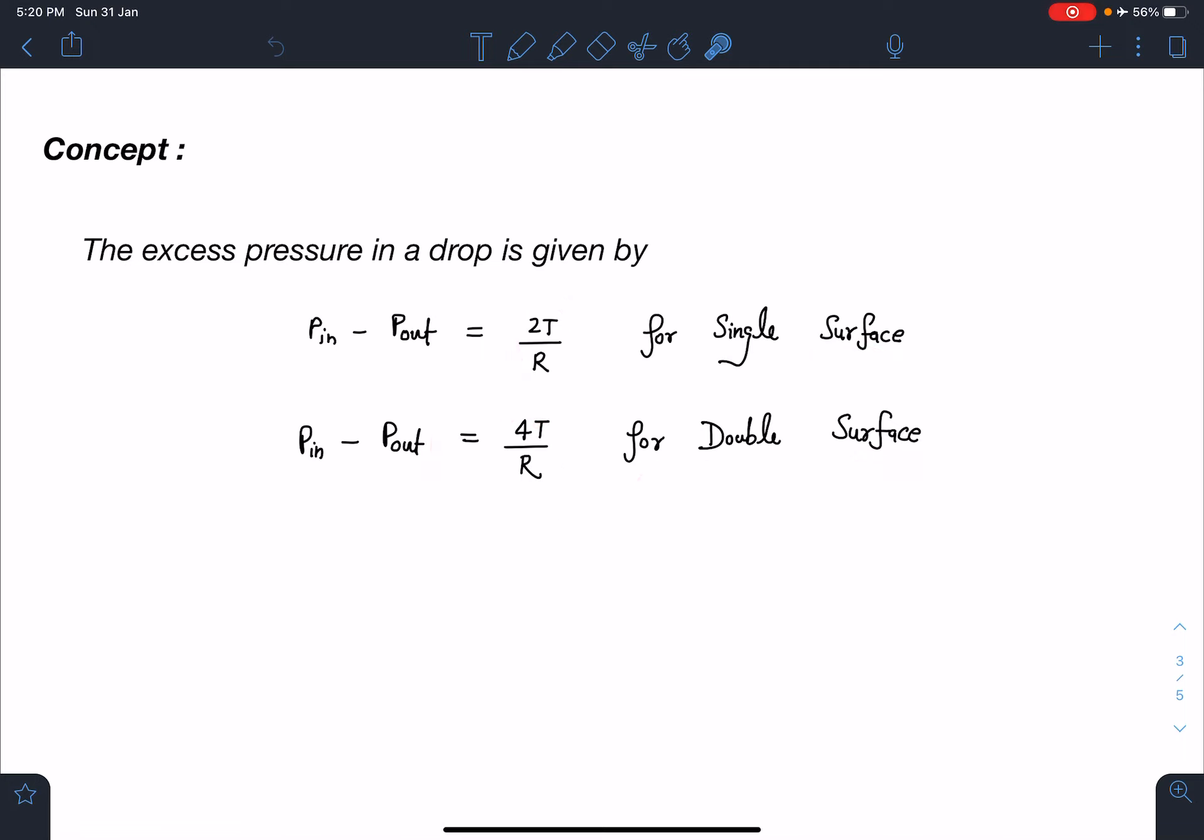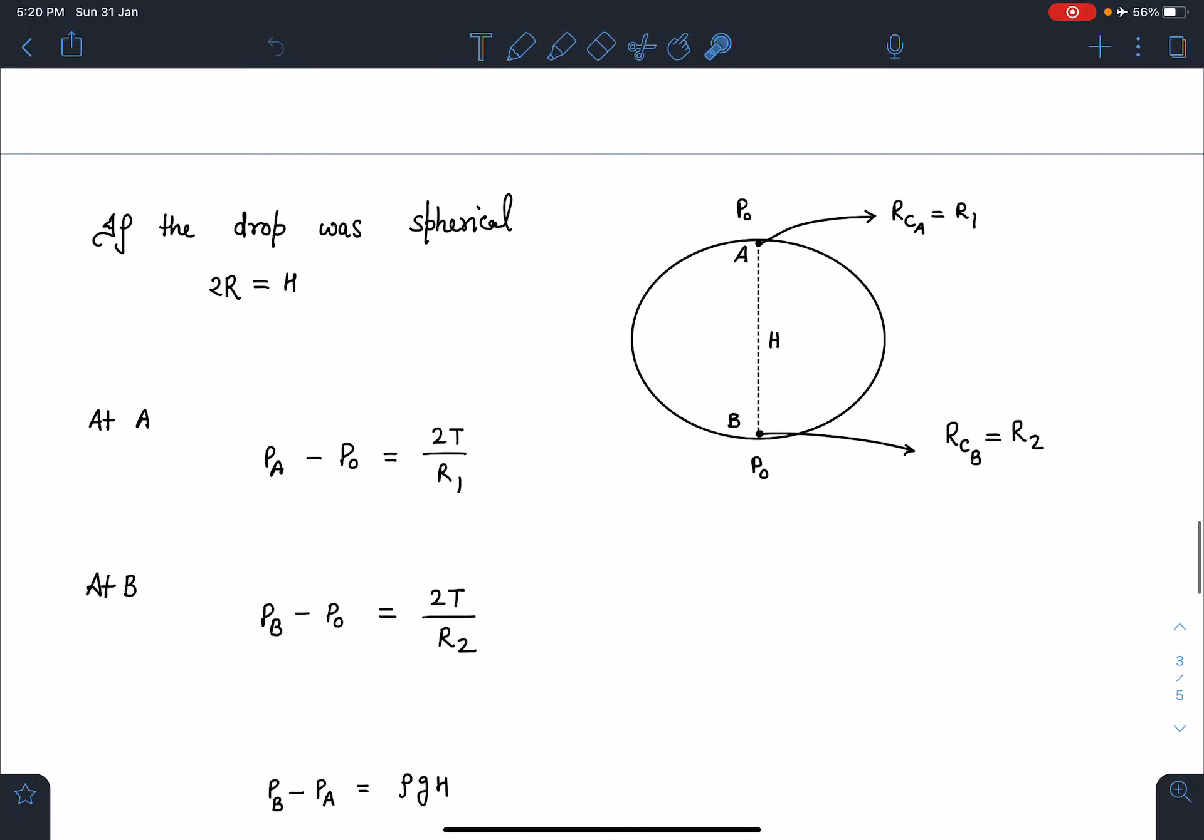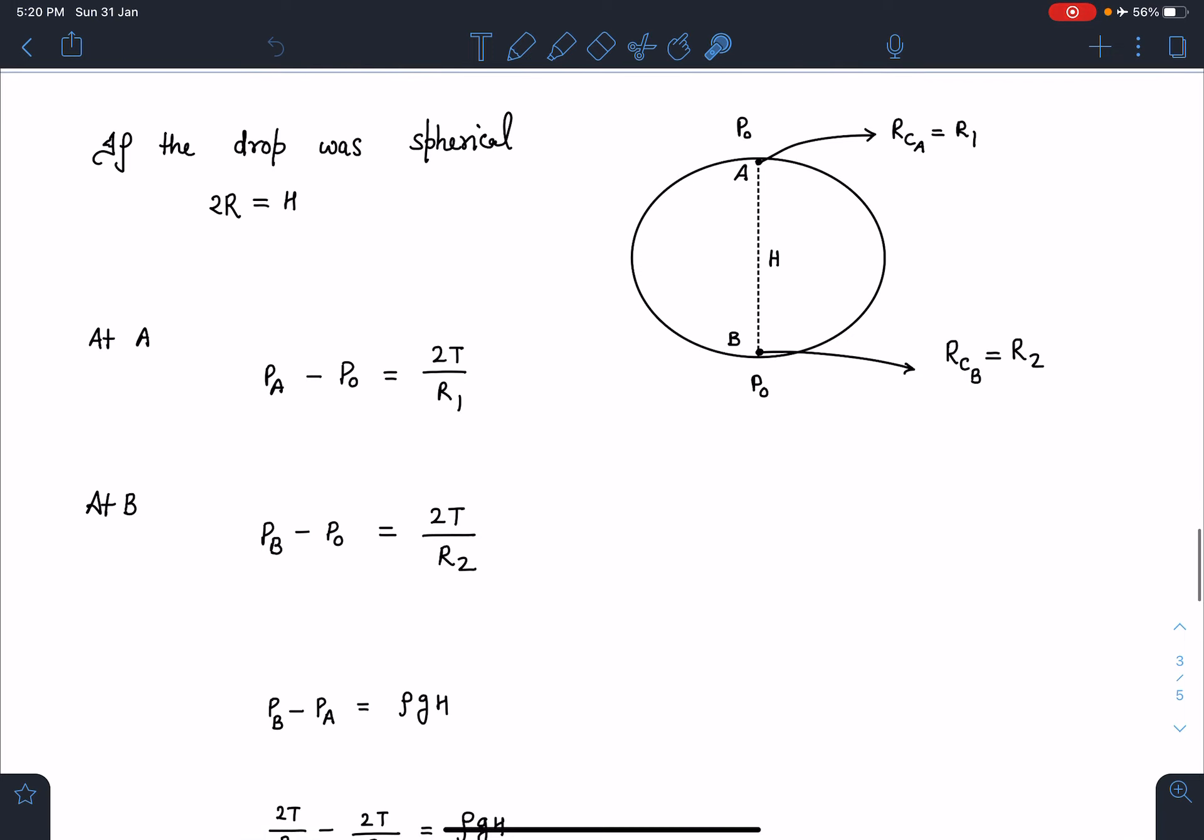If the drop was completely spherical, then two times radius would have been the value of H because total height is given as H. At this point radius of curvature is R1, at this point radius of curvature is R2.